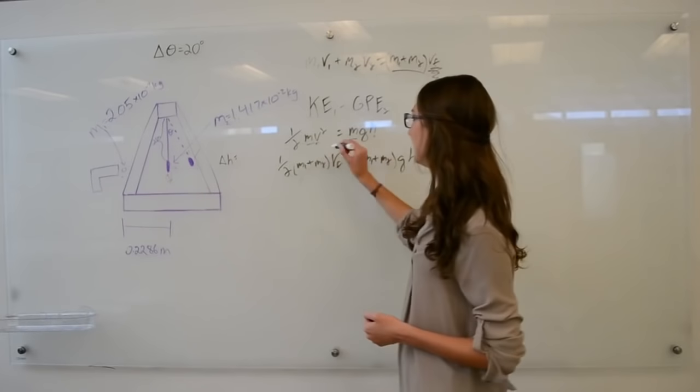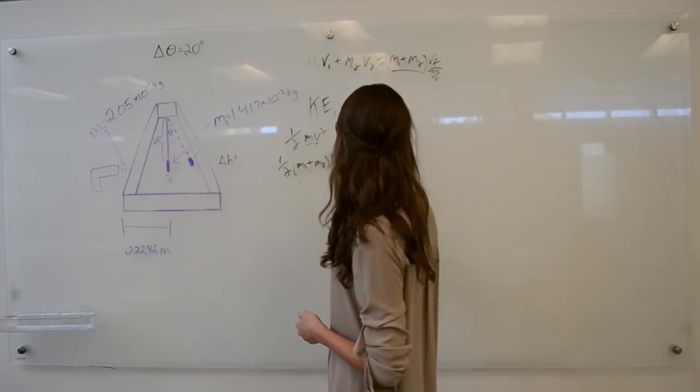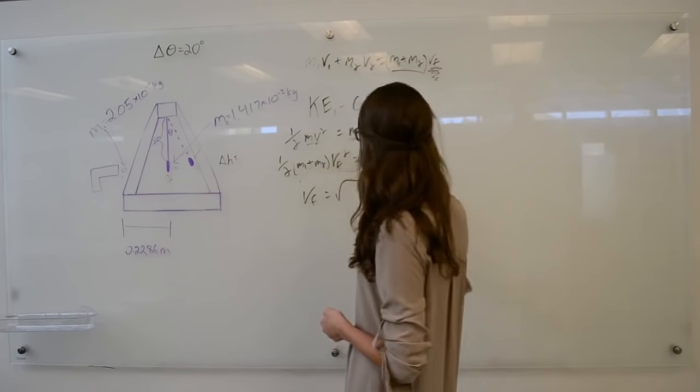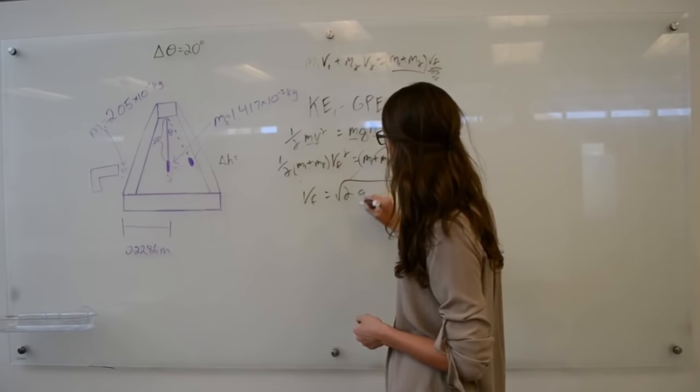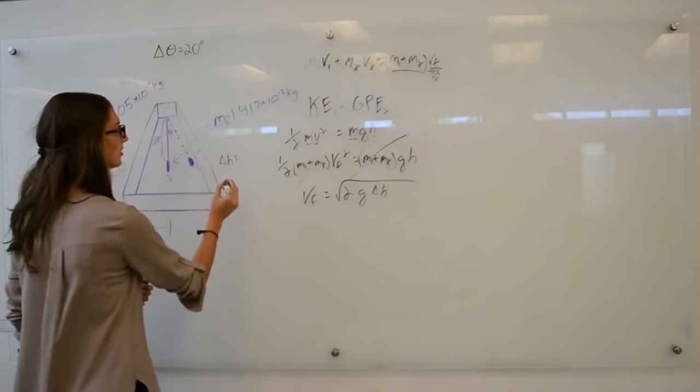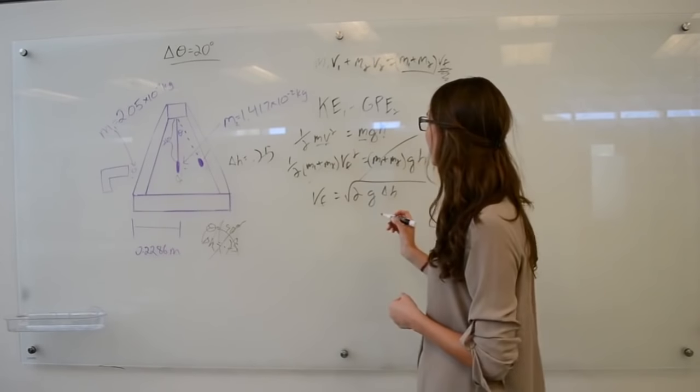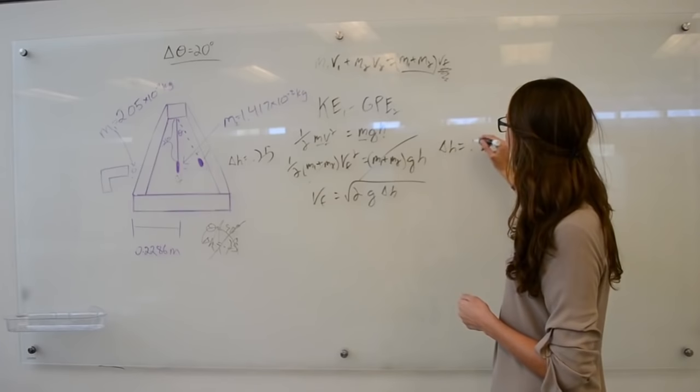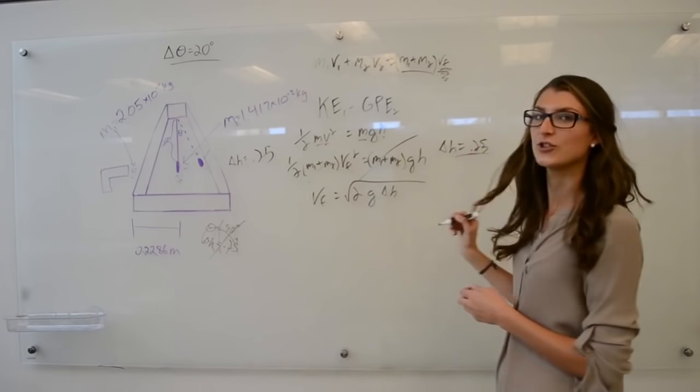We know that the masses cancel. We solve this like an energy equation. We know that VF equals the square root of 2G delta H. We found delta H here, so we just plug in the numbers. We know that delta H is equal to 0.25 meters just for measurements.